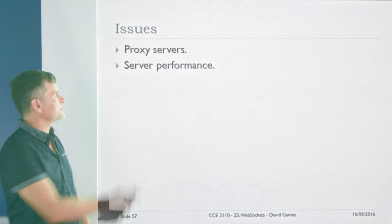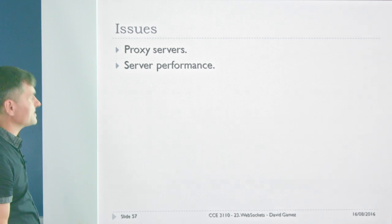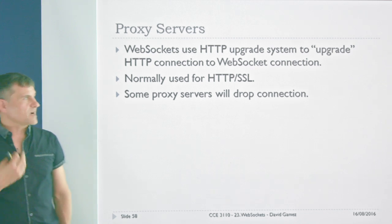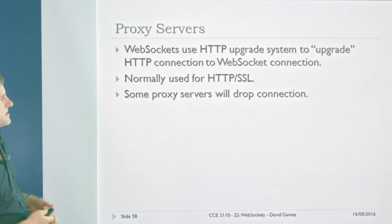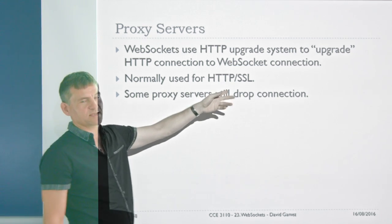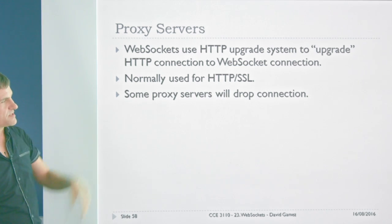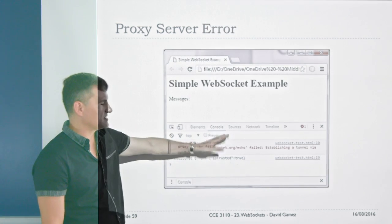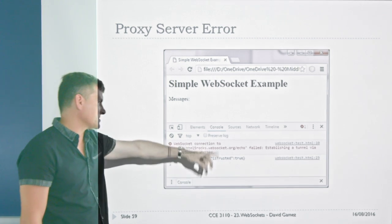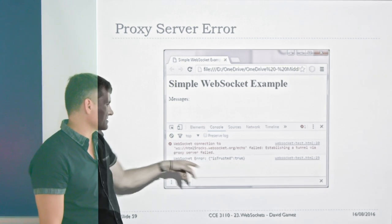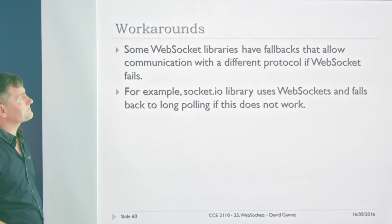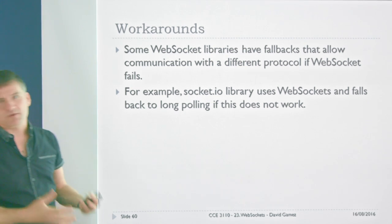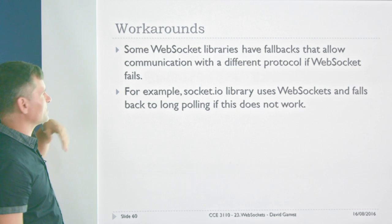A couple of issues to cover. WebSockets use the HTTP upgrade system to upgrade the connection to a WebSocket connection — this is normally used for HTTP SSL, which is why it's a bit hacky. Some proxy servers will drop this connection so it just won't work over a proxy server. You'll get an error in Chrome's debugging console like 'WebSocket connection failed — establishing a tunnel via proxy server failed.'